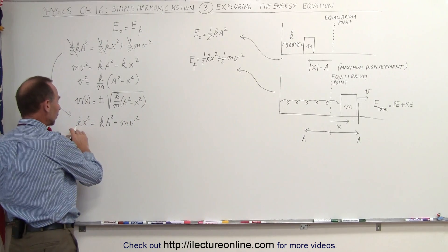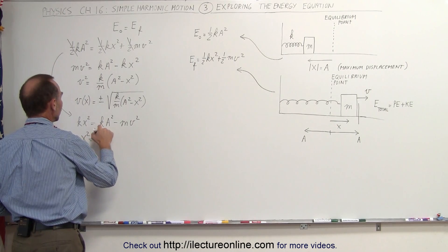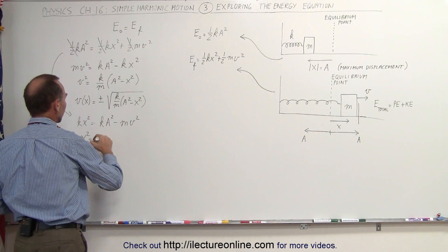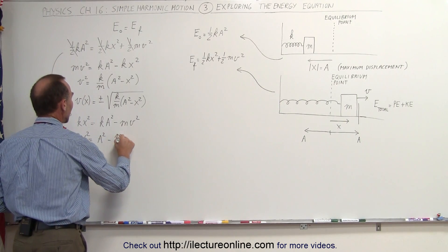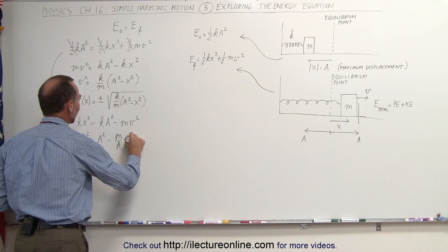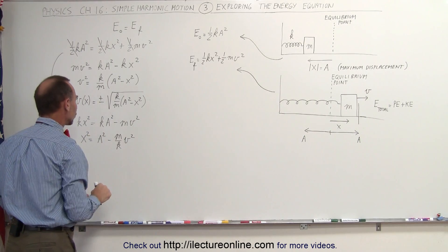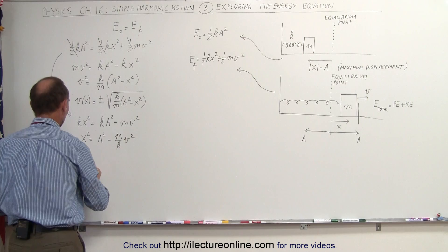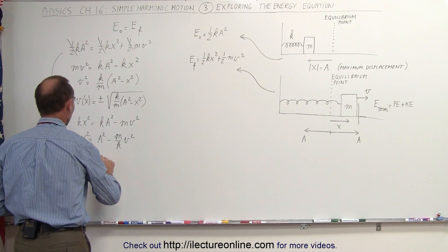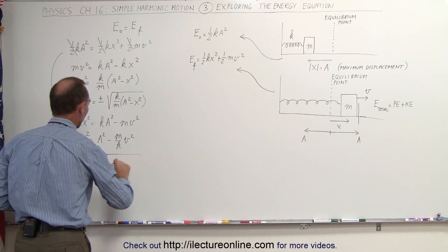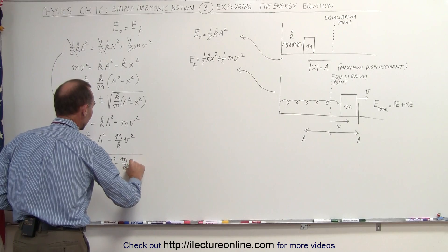Now we divide both sides by k. The k divided by k simply becomes one and disappears, so we get x squared is equal to A squared minus m over k times v squared. Now we take the square root, so x as a function of velocity is equal to plus or minus the square root of A squared minus m over k times v squared.